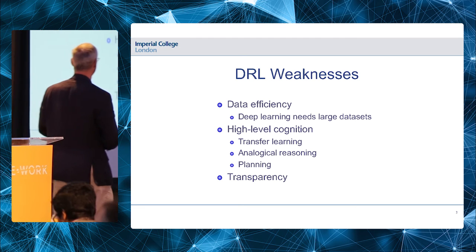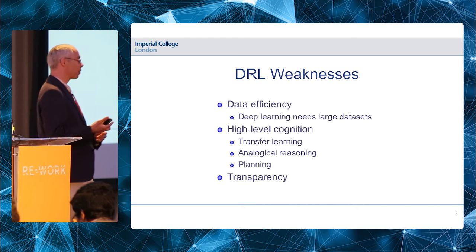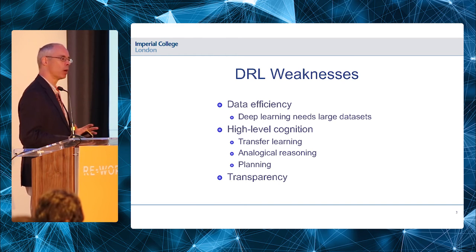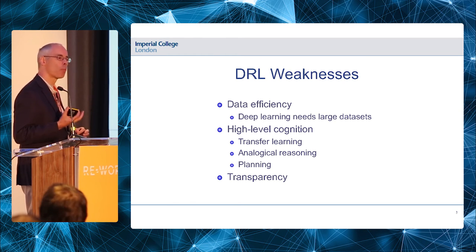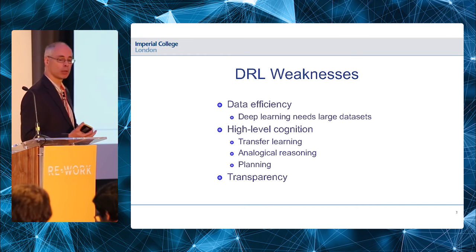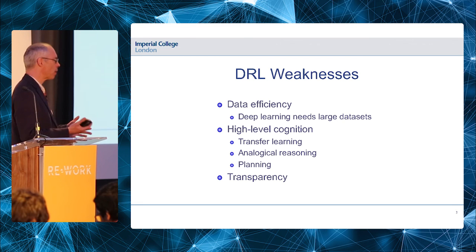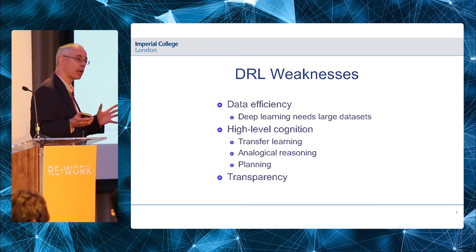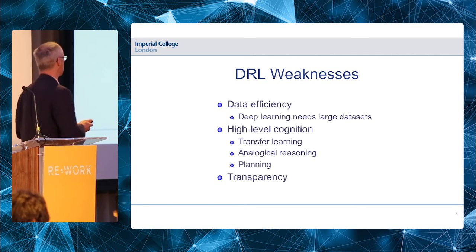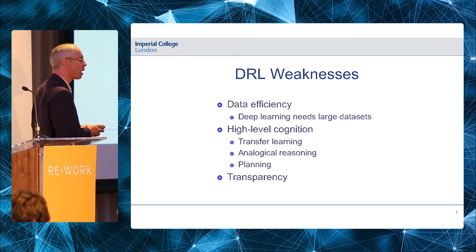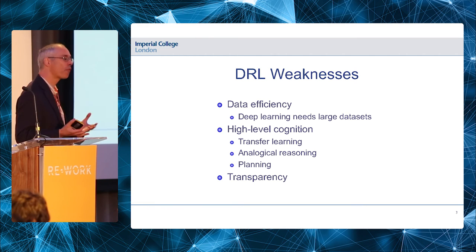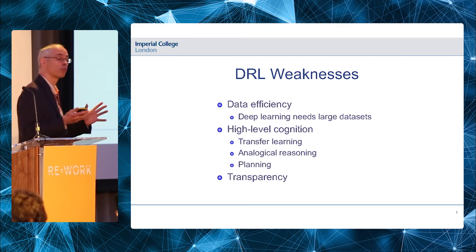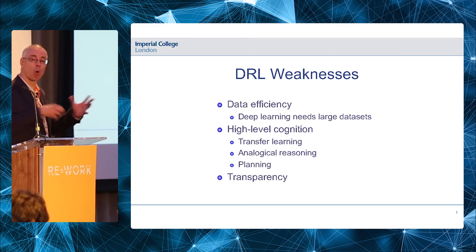A third issue is transparency. With the current generation of deep neural networks, it's often very difficult to extract humanly comprehensible reasons for the decisions they take or the labels they produce. There are various ways to visualize how deep networks work, but it remains a big challenge. I'm going to suggest that we can bring some good old-fashioned AI — symbolic reasoning — to bear on reinforcement learning, helping tackle many of these problems all at once.